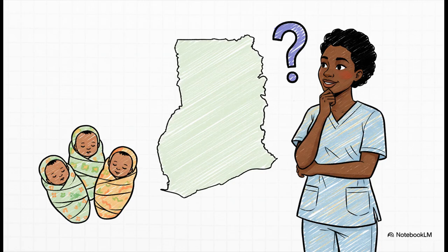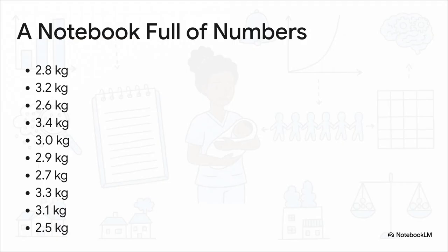To make this all feel a bit more real, let's picture someone. Let's meet a midwife working in a health district in Ghana. She's right there on the front lines, and she's got a really simple but incredibly important question: are the babies being born in my community healthy? The answer is hiding in the data — and what she has to start with is a notebook, a list of the last 10 birth weights she's recorded. It's just a list of numbers. It's really hard to see any kind of pattern, and you can't really draw a solid conclusion. This is the raw material.